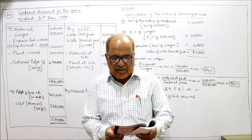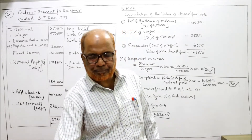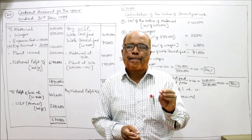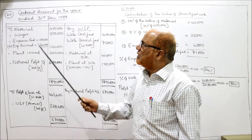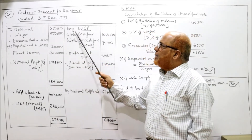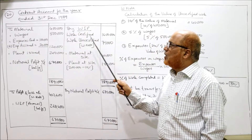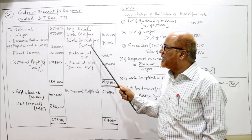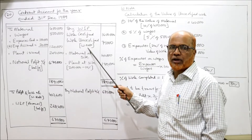Asserting the amount of profit to be transferred to P&L account: the value of the contract is 20 lakh, and 16 lakh is the work certified. Now, the contract account for the year ended 31st December 1989 — on the credit side: by work in progress, work certified is given as 16 lakh. Work uncertified is not given in the problem; we have calculated it in the working note. This is the new point.